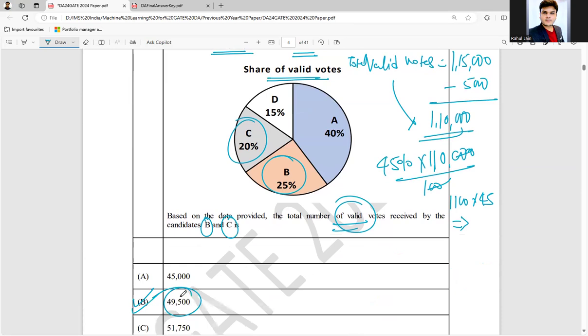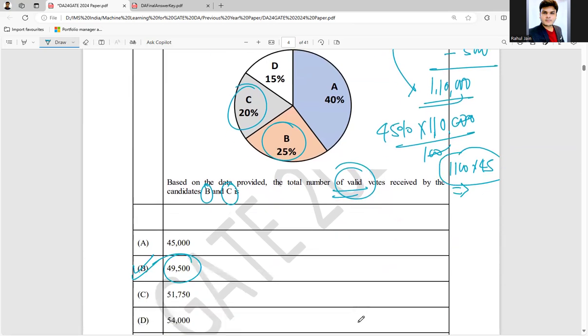So just a simple calculation and you are going to get 49,500, it is the correct answer. I hope it is clear.